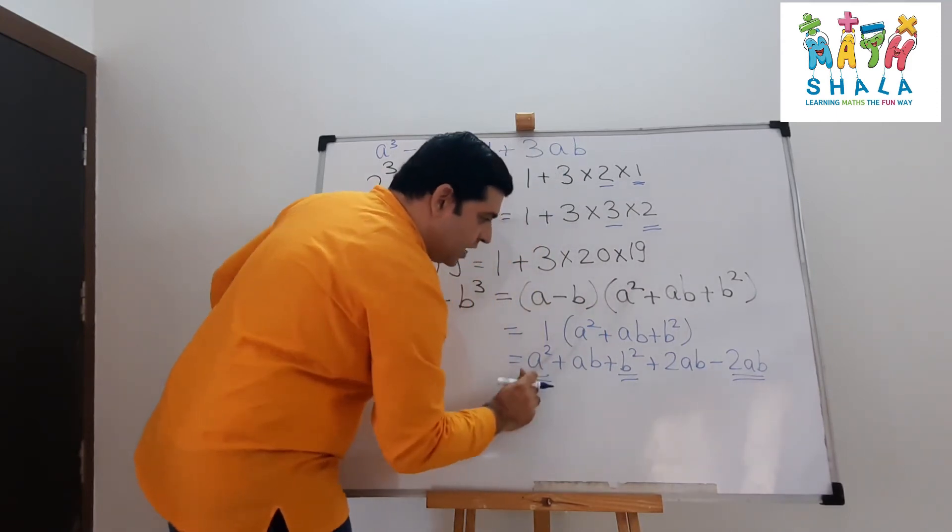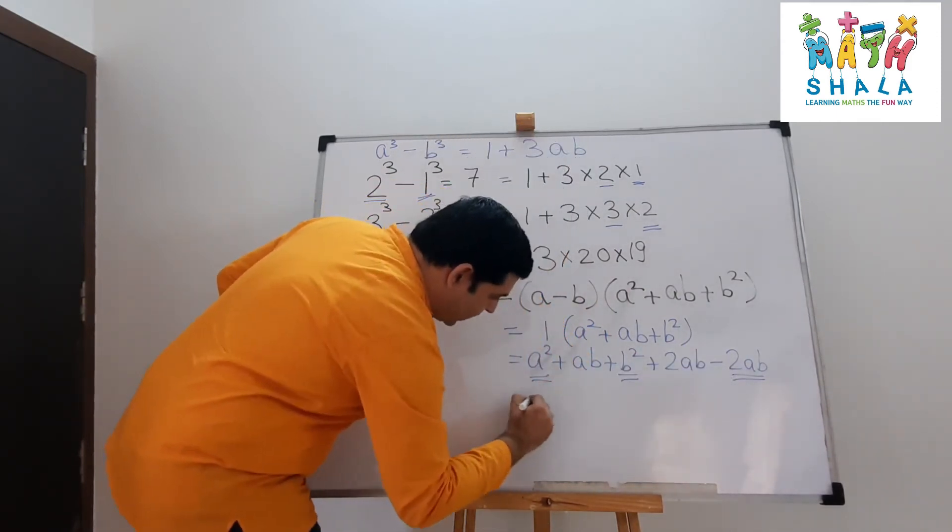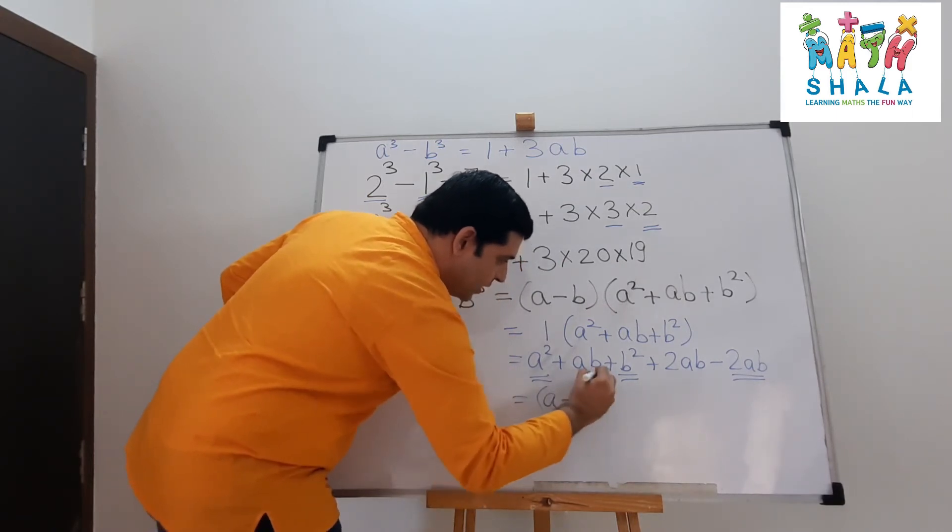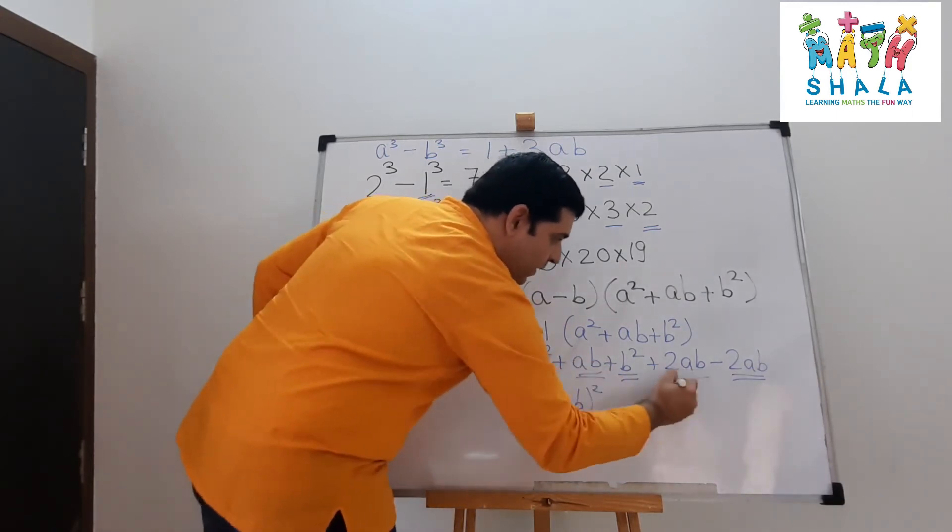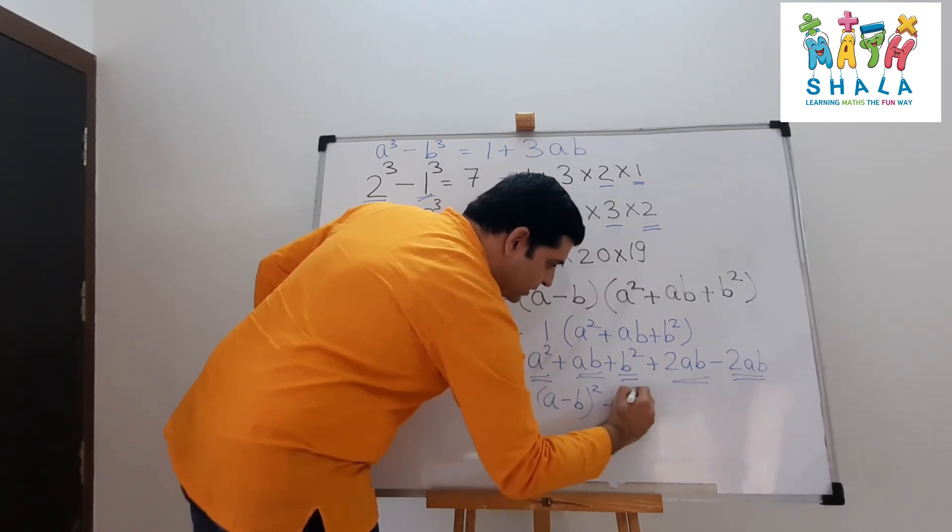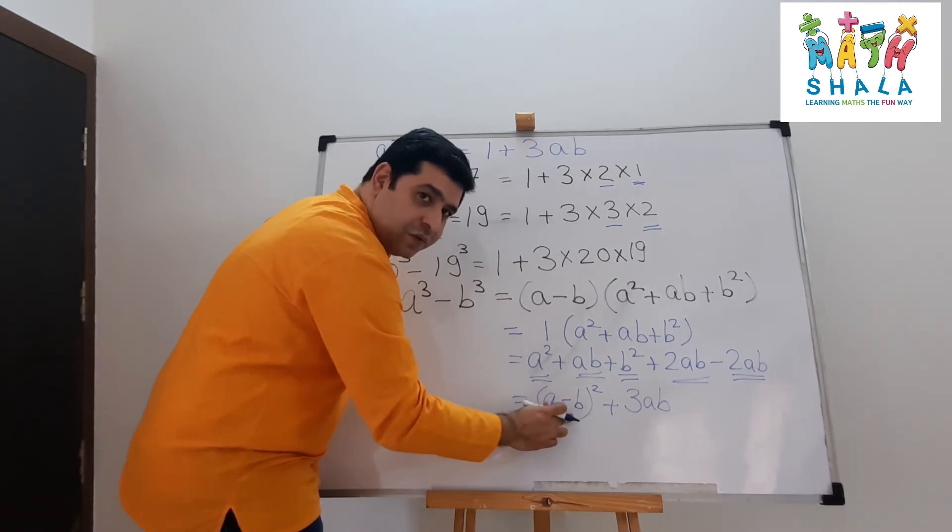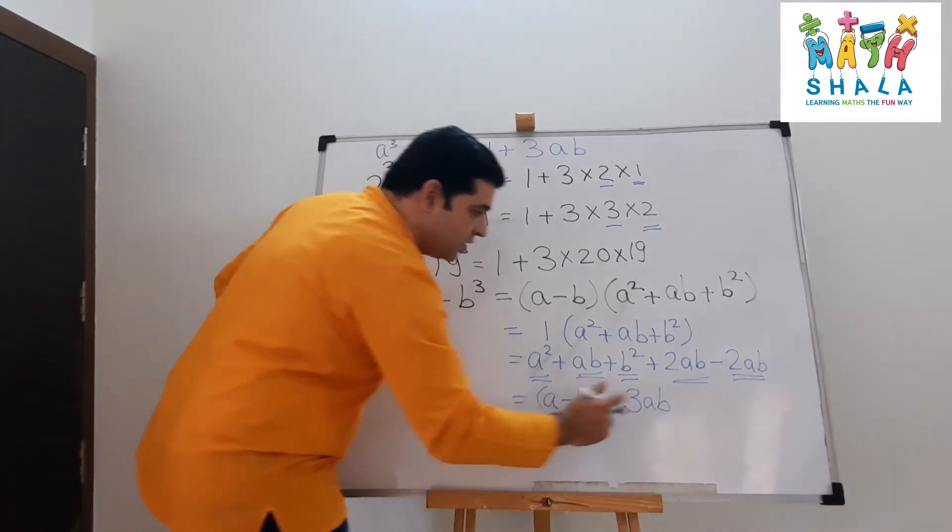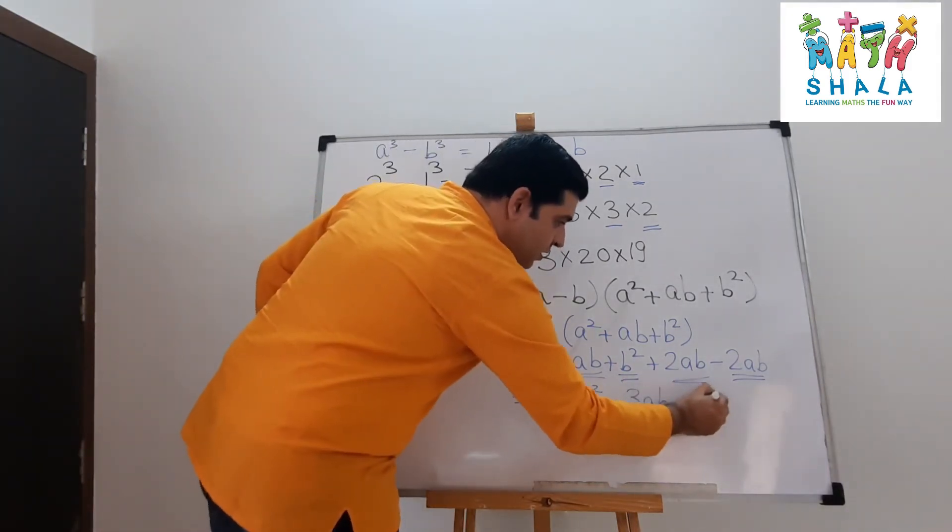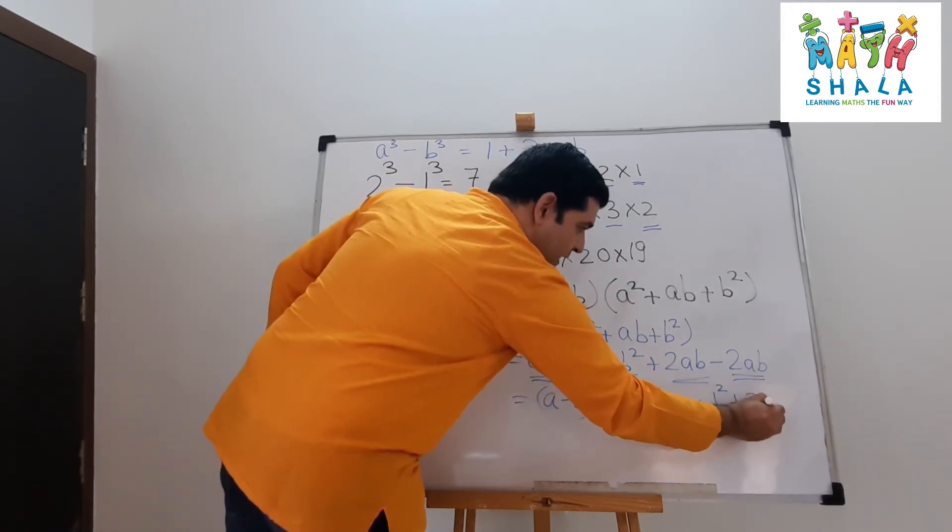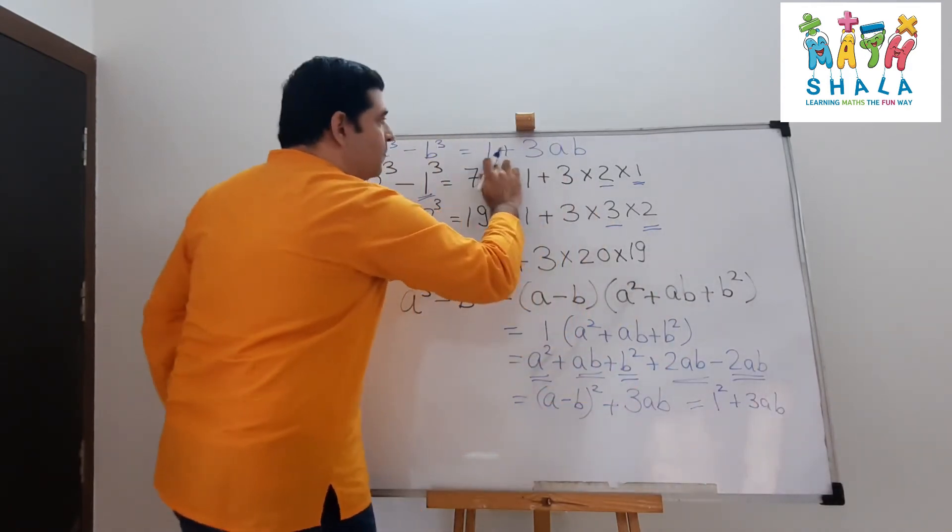a square plus b square minus 2ab together become a minus b whole square, and ab plus 2ab is 3ab. Since it's a difference between two consecutive numbers, it would always be 1. 1 square plus 3ab, which means 1 plus 3ab.